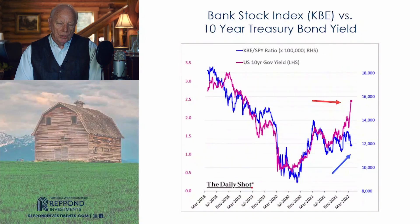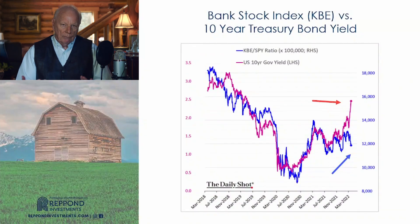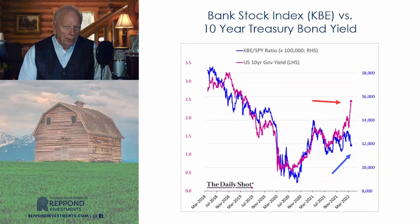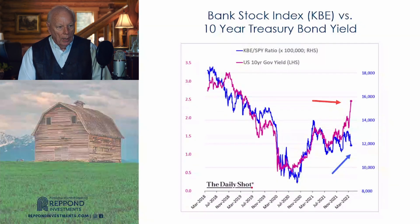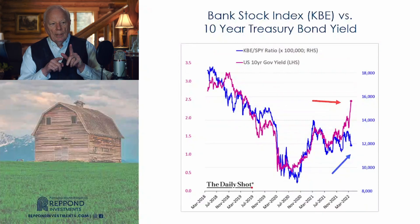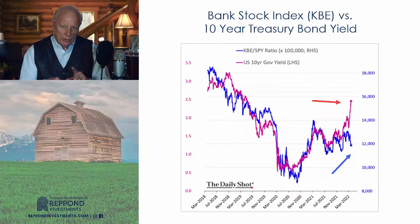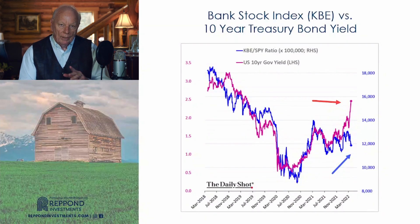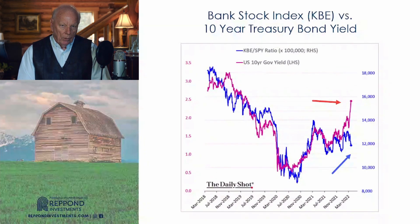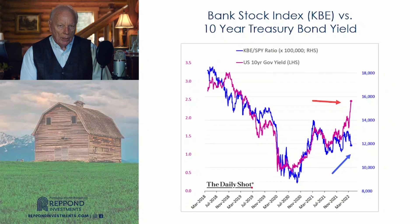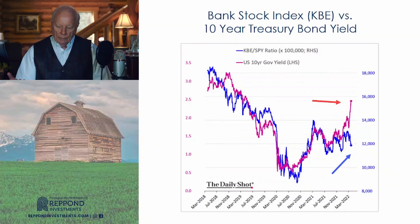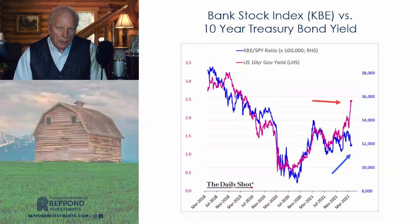The bank exchange-traded fund KBE is a collection of banking stocks. Typically bank stocks move up when interest rates go up. However, recently bank stocks started to decline while interest rates are still going up — which is saying there is other risk associated with bank stocks beyond the traditional correlation between interest rates and bank stocks.